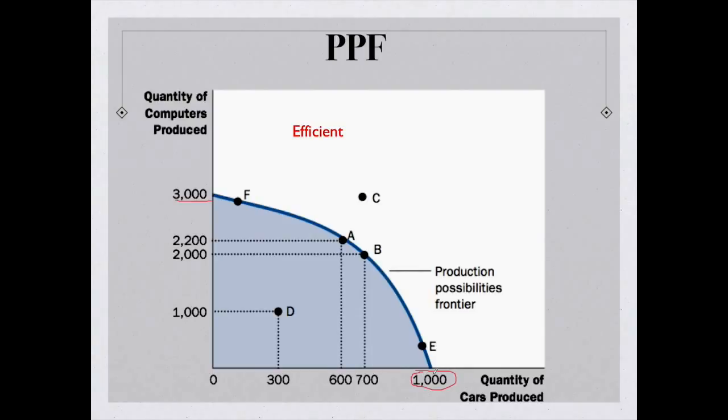And then my economy can actually produce any other number of combinations along this blue line. So, for example, at point A, they could produce 2,200 computers and 600 cars. Or at point B, they could produce 200 fewer computers, but 100 more cars.